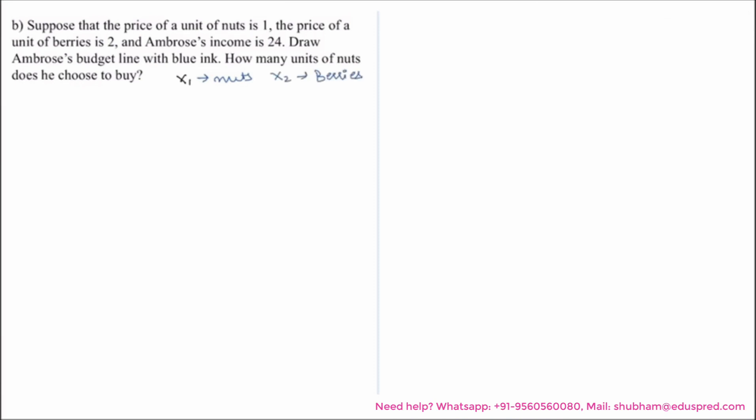Let P1 be the price of nuts, P2 be the price of berries, and M be his income. According to the question, P1 is 1, price of berries is 2, and his income is 24.